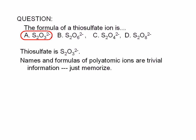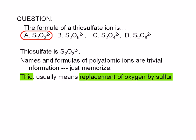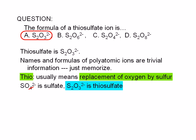The prefix 'thio' usually means replacement of oxygen by sulfur. You should know that sulfate is SO4 with a negative 2 charge. If we replace one of the oxygen atoms with a sulfur atom, this gives us two sulfur atoms and three oxygen atoms — S2O3 with a negative 2 charge — which is thiosulfate.